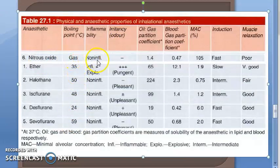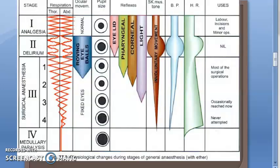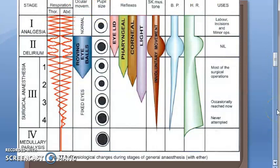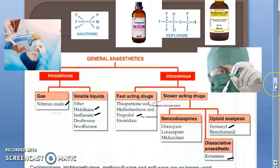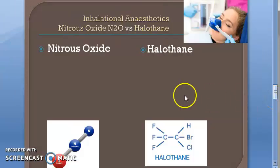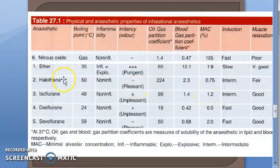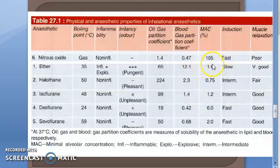For nitrous oxide, induction is fast — they are saying induction means reaching stage 1, and you should reach stage 1 fast. The minimum alveolar concentration (MAC) for nitrous oxide is 105%.